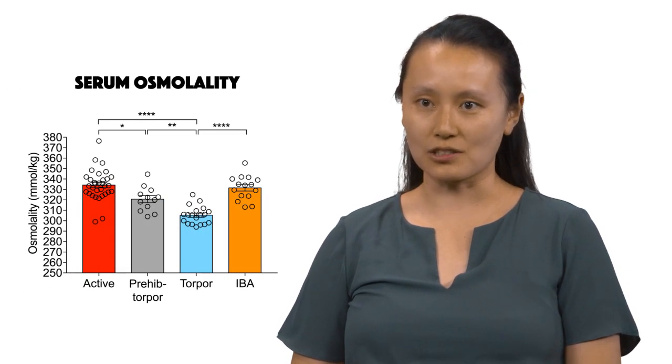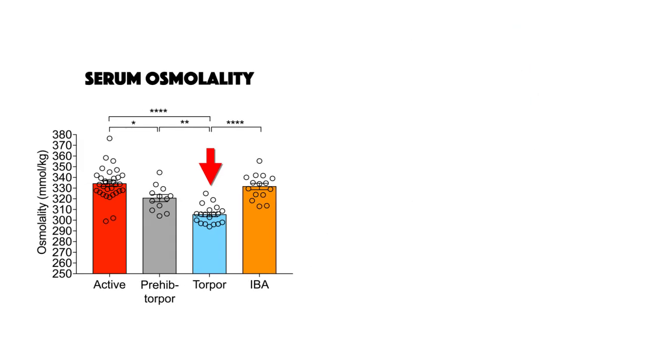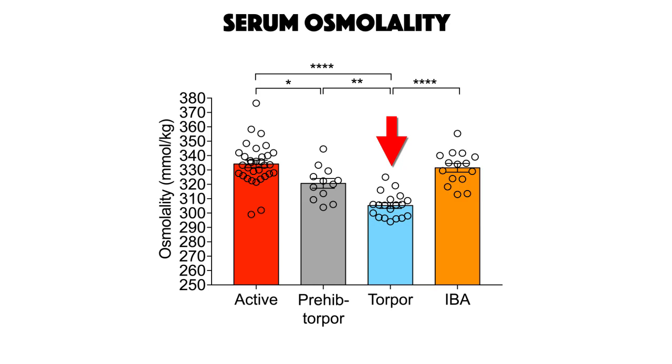So when you think about humans not drinking for a long time, we get progressively dehydrated, and that shows up in our blood and our serum concentration. We get increased serum concentration when we don't drink water. In our squirrels, we were surprised to find that they actually do not show any signs of dehydration. In fact, their serum osmolality or concentration decreases in torpor by as much as 30 milliosmoles per liter. And during IBA, their serum concentration goes back up to active levels, which is about 330.